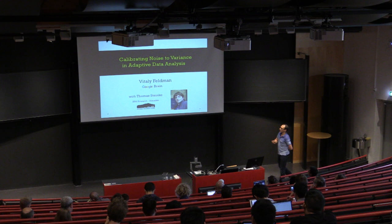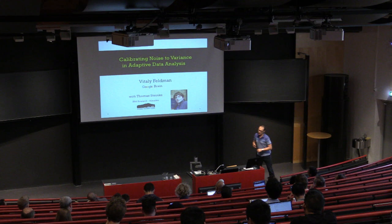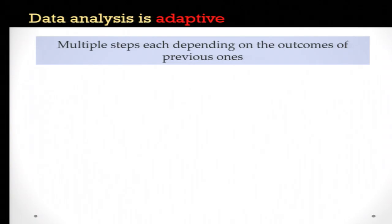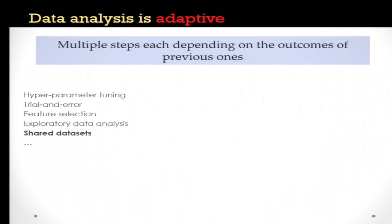What is adaptive data analysis? It's a new look at an old problem in statistics — the disconnect between theory and practice in which we analyze learning algorithms one at a time as if they are run on fresh IID samples. But in practice, most data analysis consists of many steps run over the same data set, and these analyses depend on each other, resulting from tuning parameters, doing trial and error, and sharing data sets.